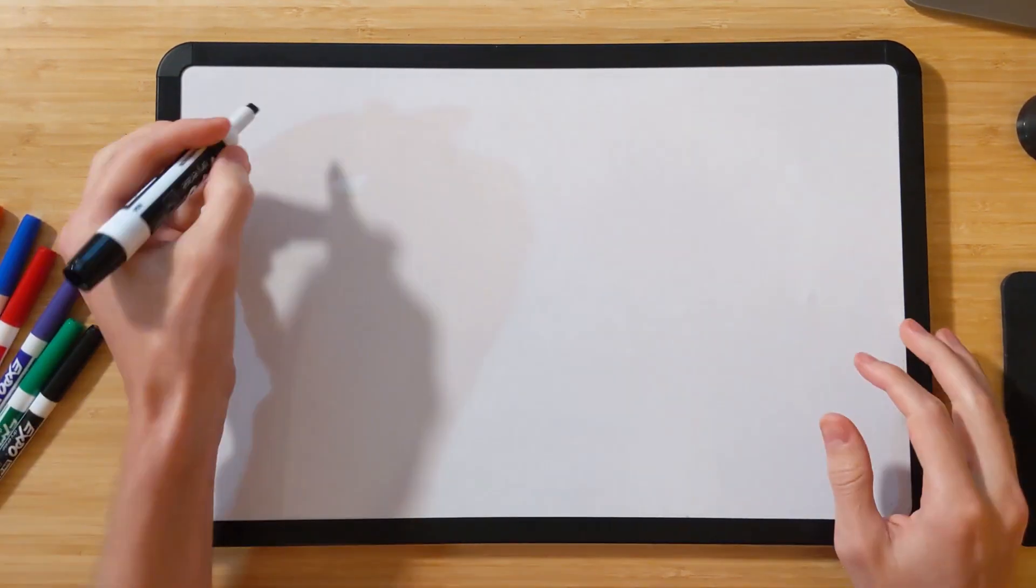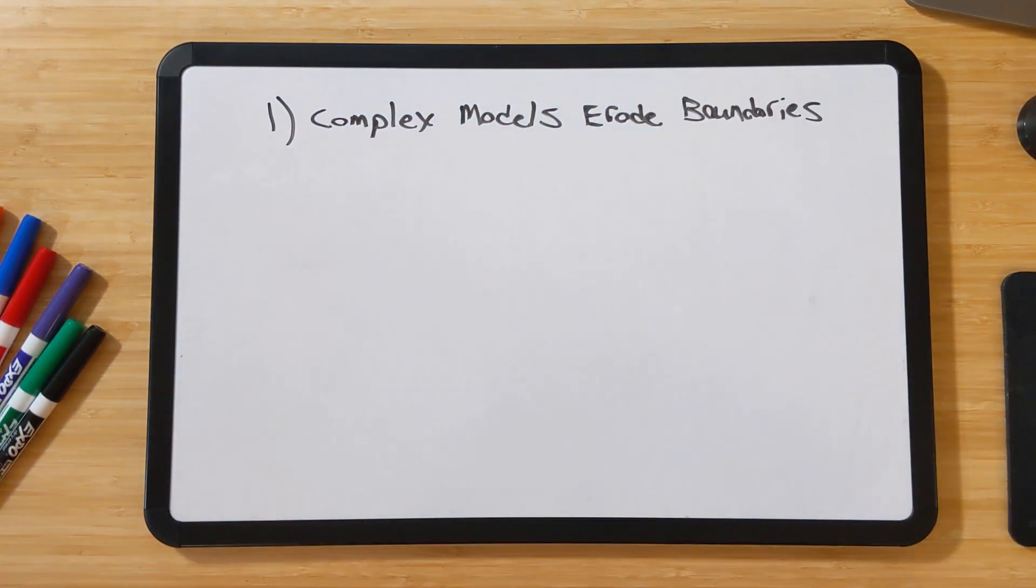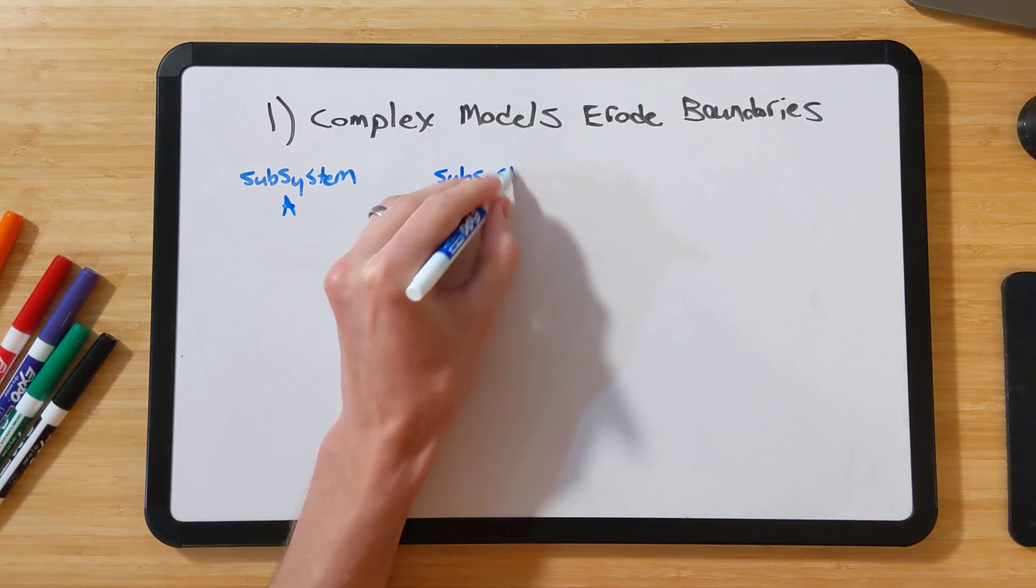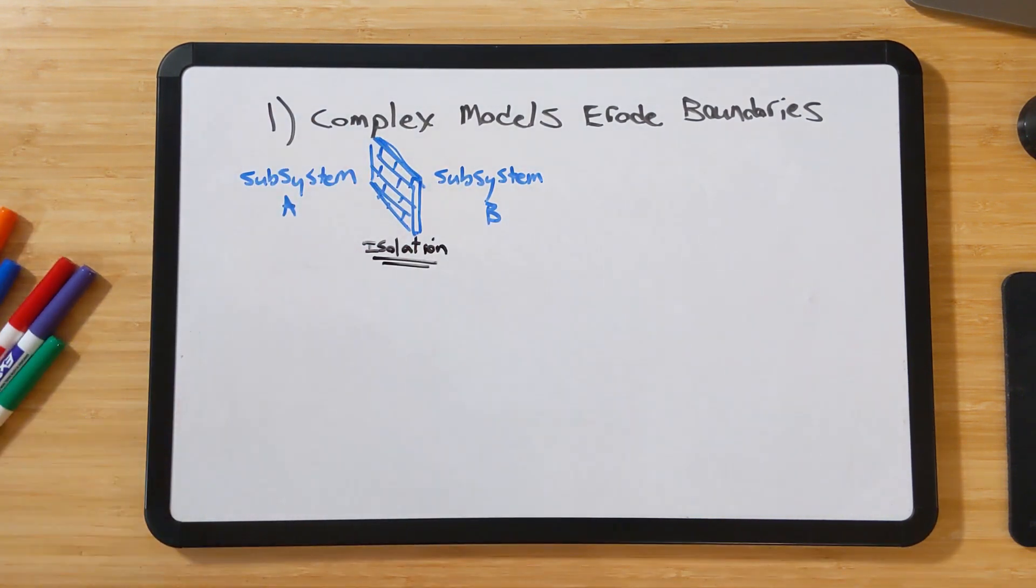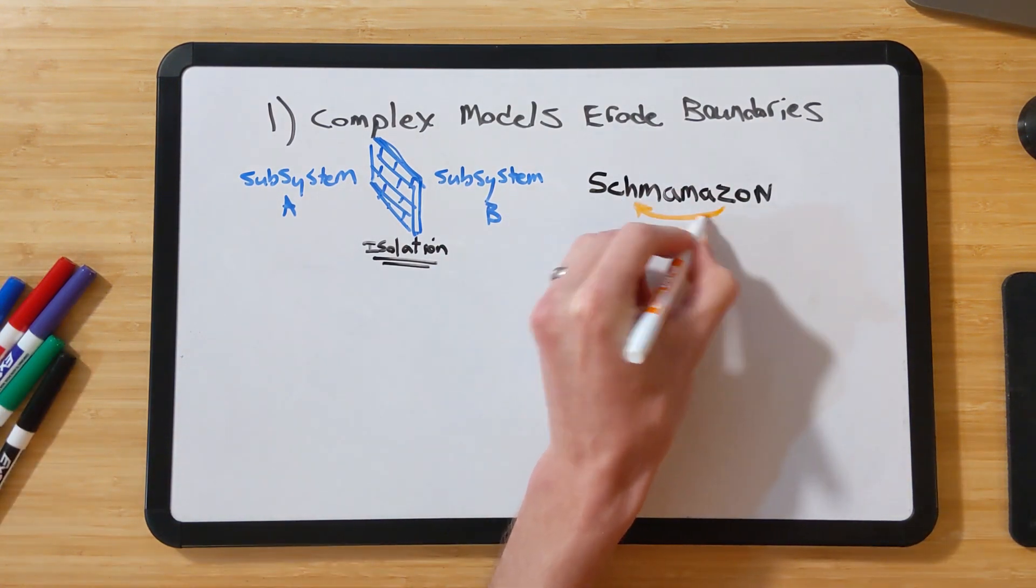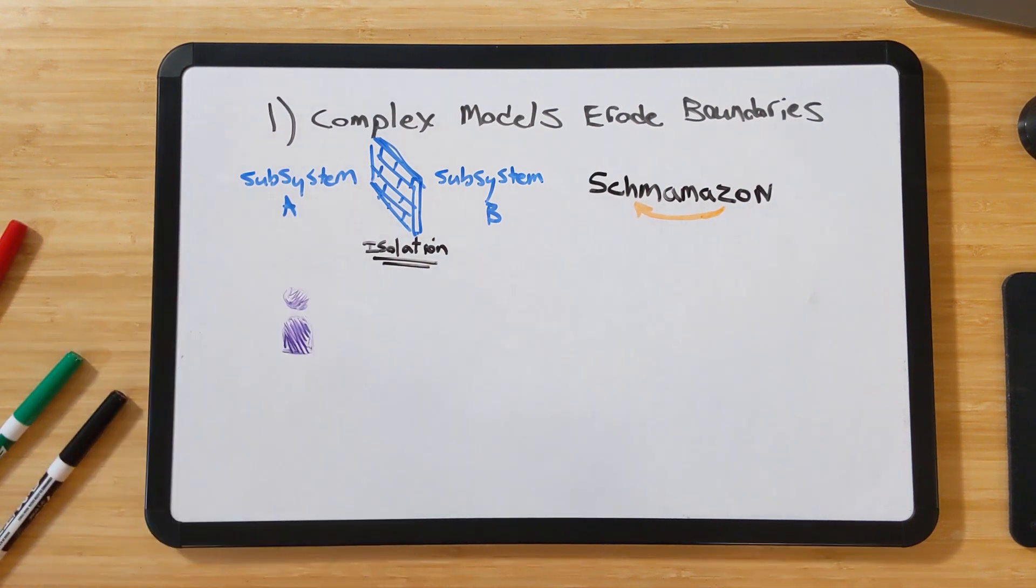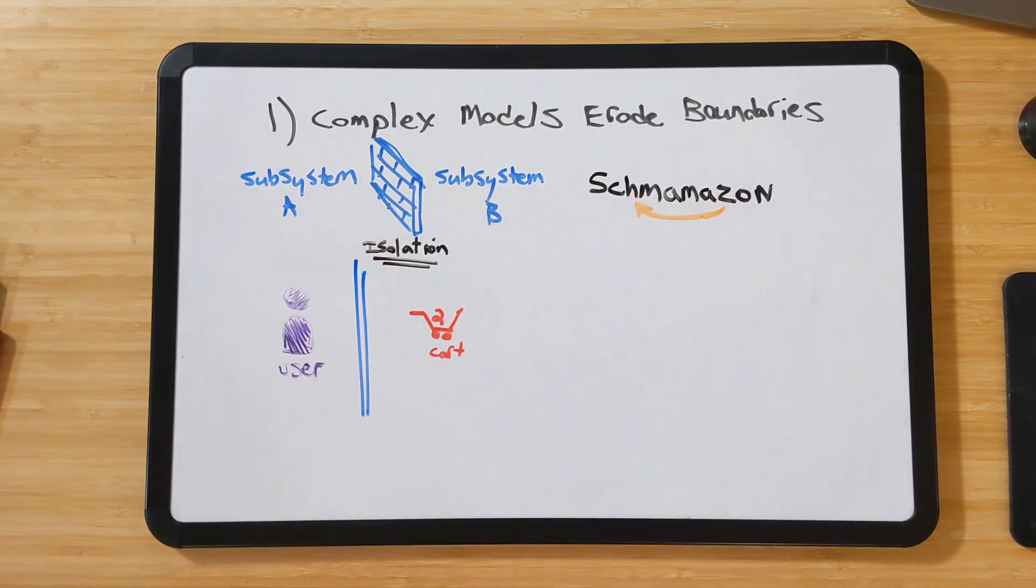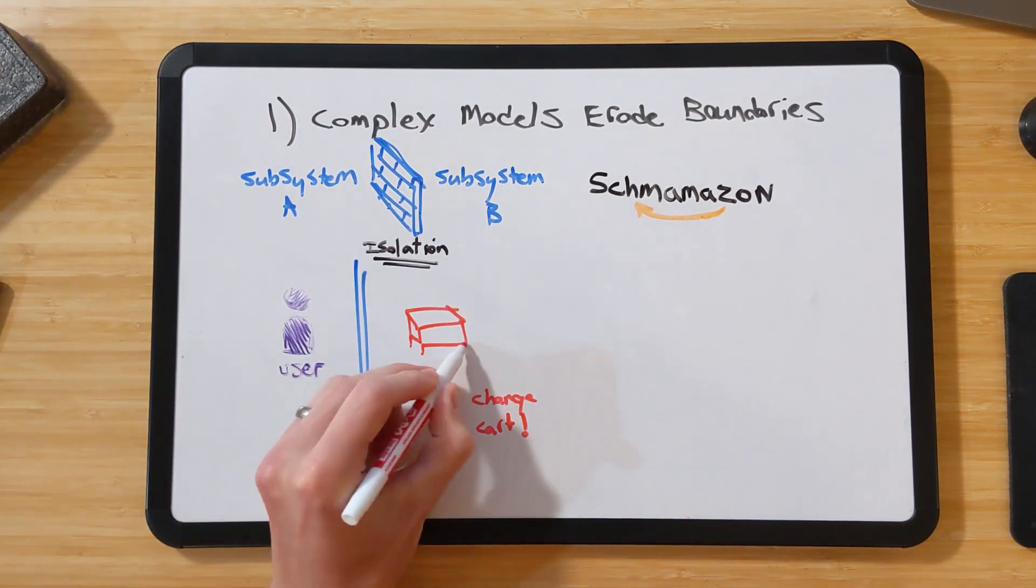Reason number one, complex models erode boundaries. What does this mean? When writing software, it is best practice to isolate different portions of the code base from each other. For example, let's imagine we are operating an e-commerce website named Shmamazon. We might have one module associated with containing the user accounts, and another related to handling the shopping cart and its functionality. If those modules are isolated, it enables them to be worked on simultaneously by different people or teams without having any issues.